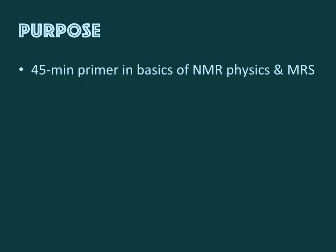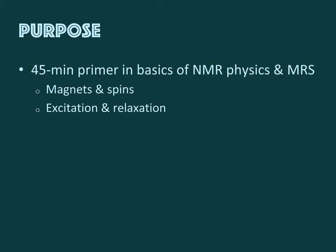We will first be talking about the way that magnets and nuclear spins behave in a magnetic field. Then we will discuss how we can excite magnetization and how it relaxes back to equilibrium after excitation. We'll learn how the signal that we receive behaves over time and how this behavior translates to frequency. And finally we'll talk about how we use radio frequency pulses and magnetic field gradients to conduct a spectroscopic experiment.